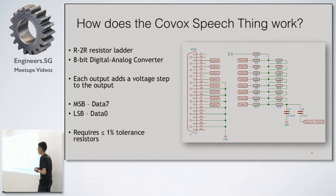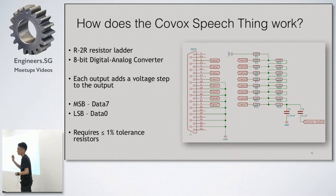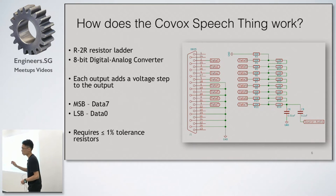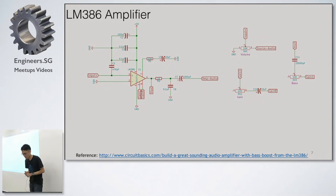Another issue is that to use a resistor ladder you need very precise resistor values — less than one percent tolerance. If you use five percent tolerance resistors, the increased variance can overwhelm the lower-significance values. In my sound card I use 0.5% tolerance resistors because the price difference between 0.5% and 1% is quite small.